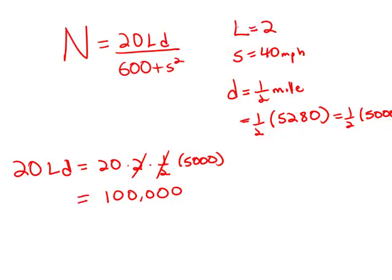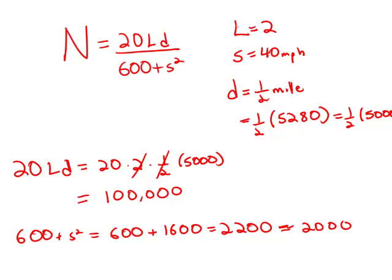Now in the denominator, 600 plus S squared. S is 40, so this is 600 plus 40 squared, which is 1,600. These add up to 2,200. Before we divide by something like this, we want to estimate it and make it a nice round number. So I'm going to estimate this as approximately 2,000.